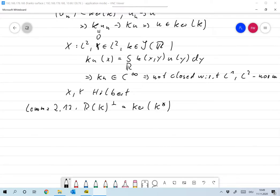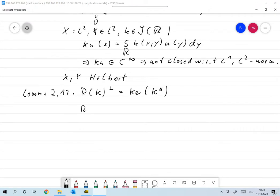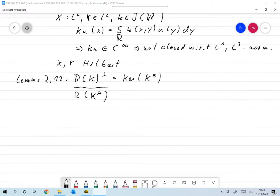And the second thing is that the range of K star, the closure of that, is the same as the kernel of K perp.